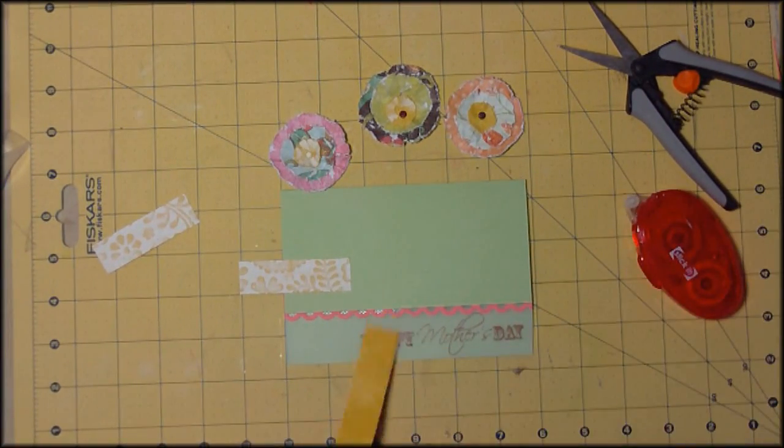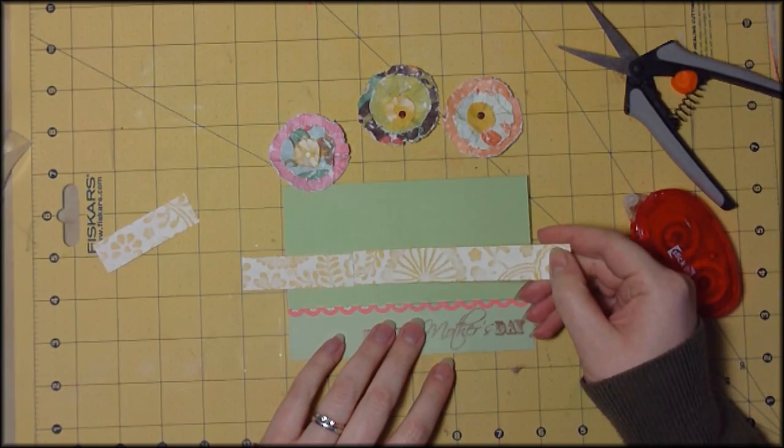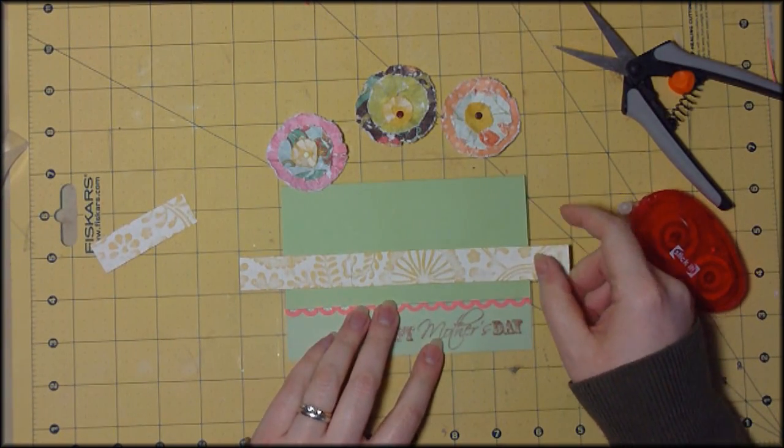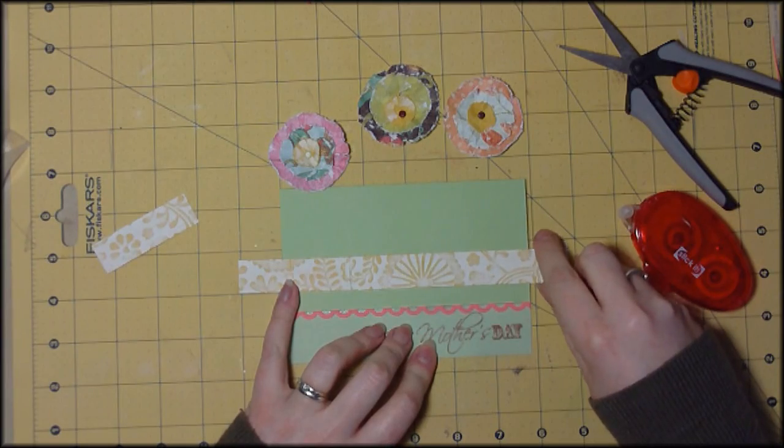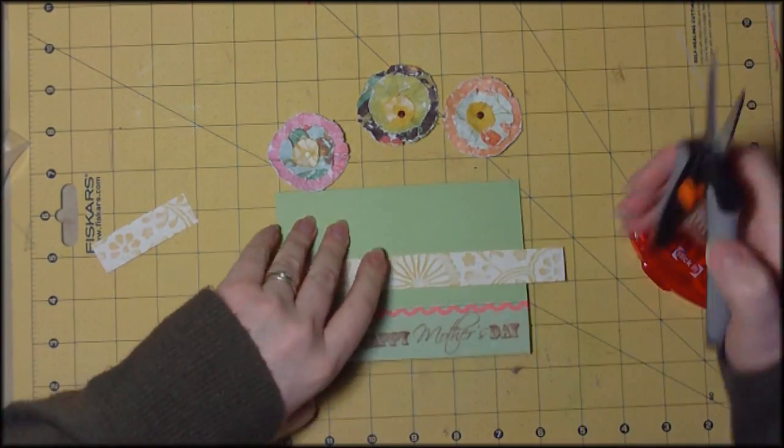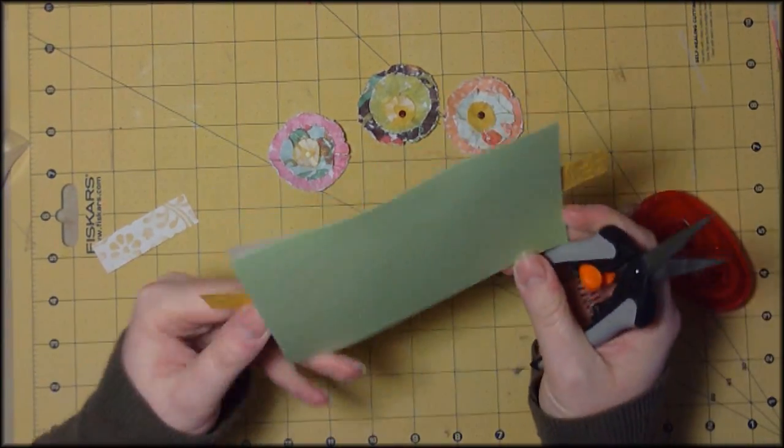So I had to cut it along its length and just join it in the middle but that bit of the join will be hidden by one of the flowers anyway so I'm not worried at all. So I'm just trimming down the edges along here again.